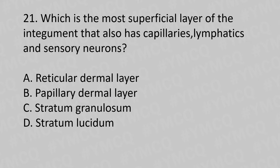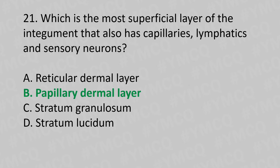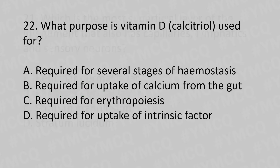Question 21: Which is the most superficial layer of the integument that also has capillaries, lymphatics, and sensory neurons? Option A: reticular dermal layer. Option B: papillary dermal layer. Option C: stratum granulosum. Option D: stratum lucidum. The answer is Option B: papillary dermal layer.